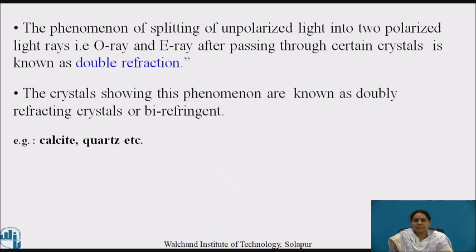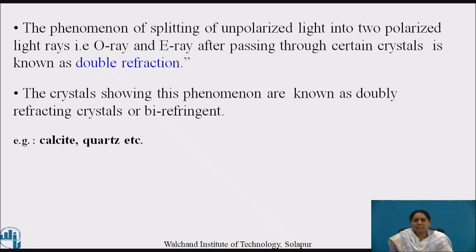Hence, the phenomenon of splitting of unpolarized light into two polarized light rays — the extraordinary ray and ordinary ray — after passing through a certain crystal is known as double refraction. The crystal showing this phenomenon is known as a doubly refracting crystal or birefringent crystal. Calcite and quartz are examples of birefringent crystals.